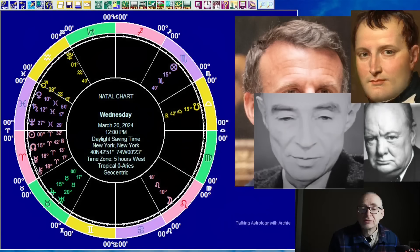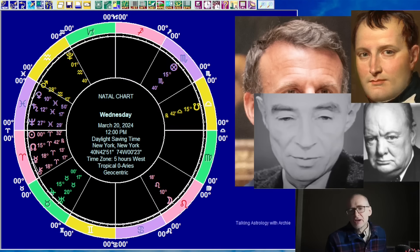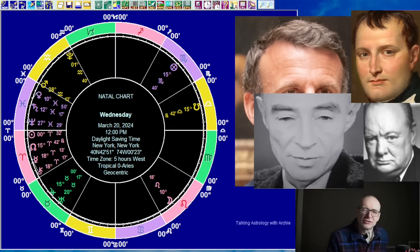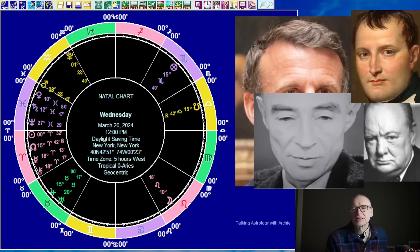In this video I want to look at the Aries point, and I'm going to look at a few charts of famous people to illustrate it at work. There will be a tutorial element at the end. But before that, I want to look at the astrology and the I Ching for today, Wednesday March the 20th, 2024. I've got Macron, Napoleon, Churchill, and Robert Oppenheimer, and I'll look at their charts in terms of their Aries point later in the video.